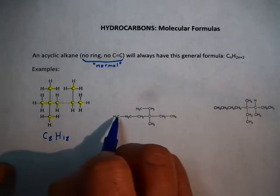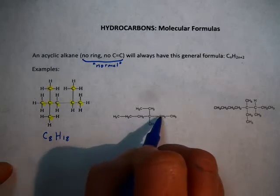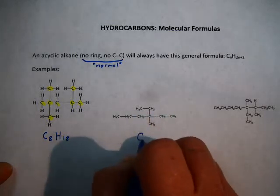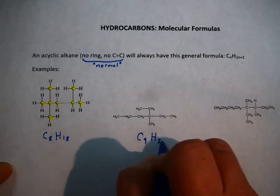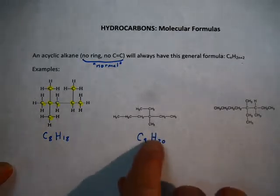How about here? 1, 2, 3, 4, 5, 6, 7, 8, 9, 9 carbons. If you double 9, you get 18 plus 2 is 20. So this is the formula.